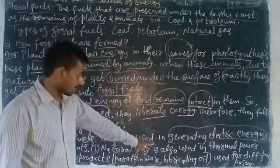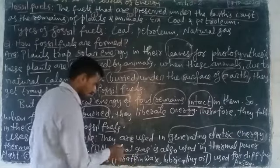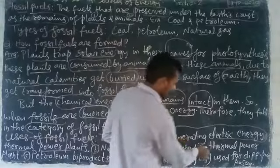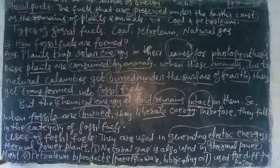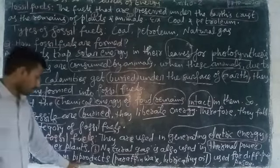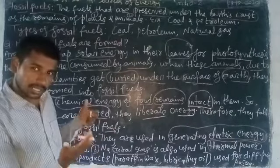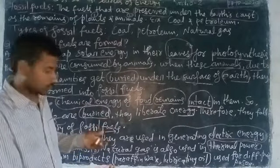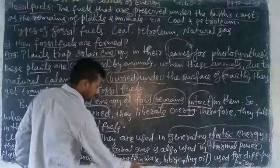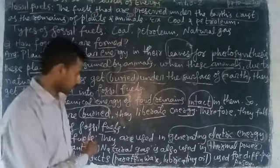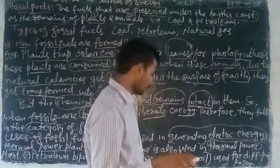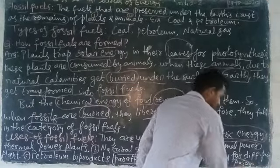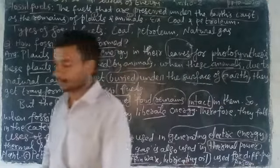Natural gas is also used in thermal power plants. Petroleum by-products such as wax and lubricating oil are used in vehicles and for different purposes.